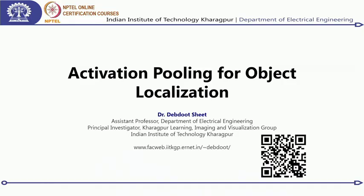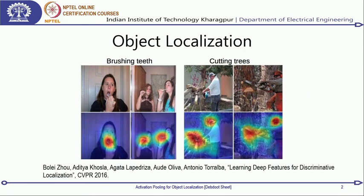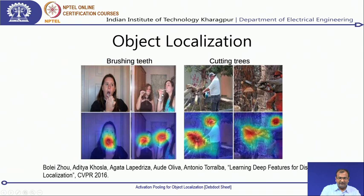The paper I am going to refer to is called 'Learning Deep Features for Discriminative Localization,' from CVPR 2016 from MIT. In the examples shown, there are two images — one person brushing teeth and another with two people brushing teeth. On the downside, you see a heat map generated which localizes where the brushing teeth action is and what in the image triggered the network to say that somebody was brushing teeth. The next example is about cutting trees — a chainsaw and the person operating it are highlighted.